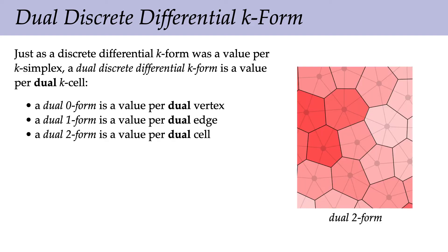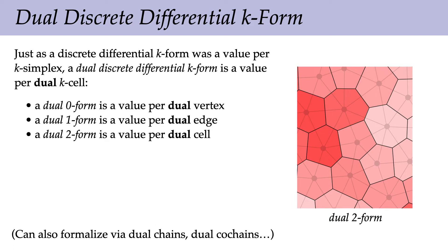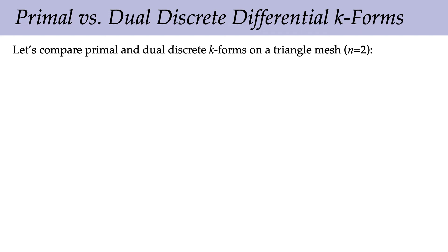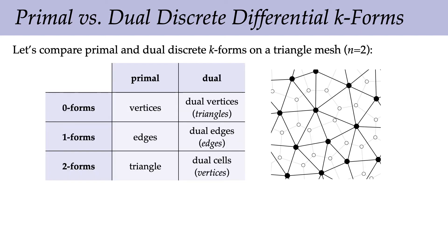A dual discrete differential k-form is a value per dual cell — a dual zero-form is a value per dual vertex, a dual one-form is a value per dual edge, a dual two-form is a value per dual cell. For instance, a dual two-form has two-dimensional cells associated with each vertex, each getting a value. In the smooth setting, there's no such thing as primal versus dual differential forms — this splitting only crops up in the discrete setting when working with meshes.